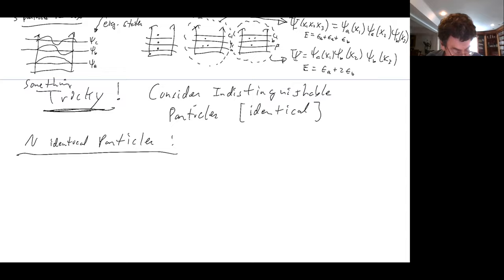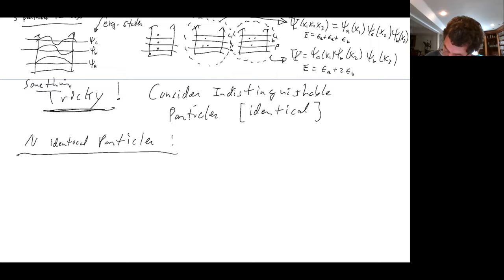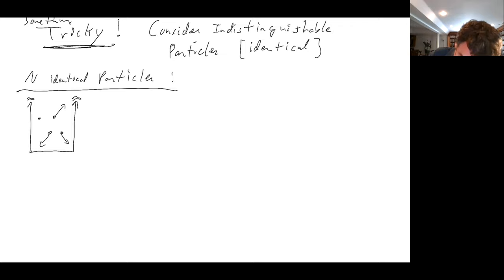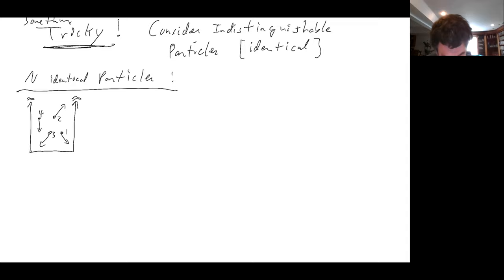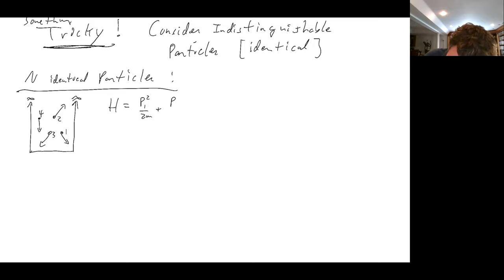Let's write down the Hamiltonian for N identical particles. Visually, I have a box with four particles bouncing around — like electrons in an atom. The Hamiltonian is: p1 squared over 2m + p2 squared over 2m + ... + pN squared over 2m, plus the potential energy terms. For these arguments, we don't even need to restrict to the non-interacting case — the particles could actually be interacting.